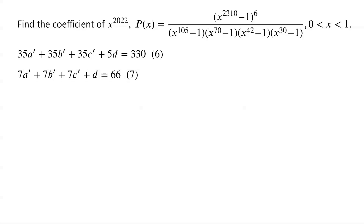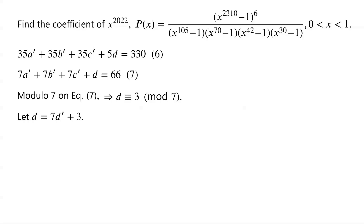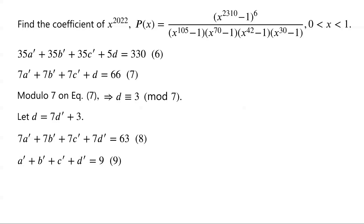The coefficient of X to the power of 2022 in P of X equals the number of non-negative integer solutions of equation 7. Since 66 is congruent to 3 modulo 7, taking equation 7 modulo 7 gives D is congruent to 3 modulo 7. We let D equal 7D' plus 3. Substituting into equation 7 gives 7A' plus 7B' plus 7C' plus 7D' equals 63. We label this equation 8. The coefficient equals the number of non-negative integer solutions of equation 8. Dividing equation 8 by 7 gives A' plus B' plus C' plus D' equals 9. We label this equation 9.